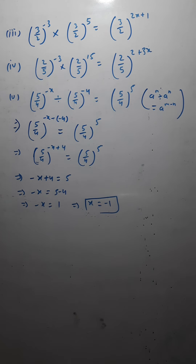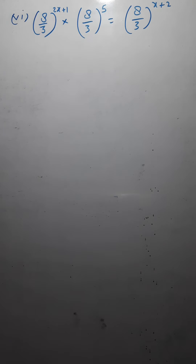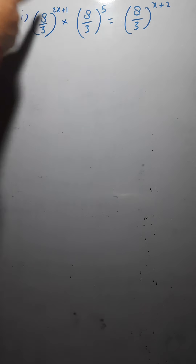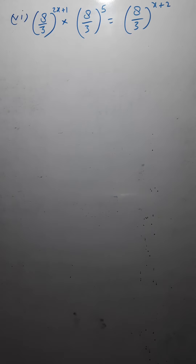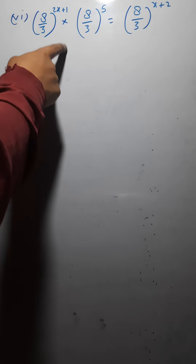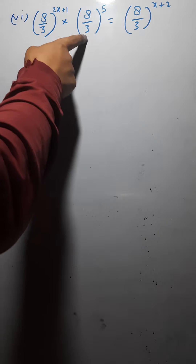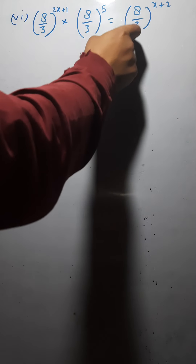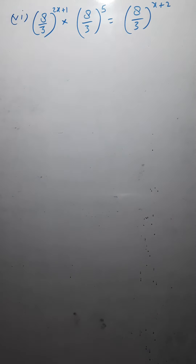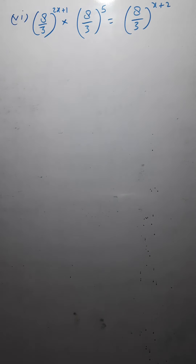This is how you find the value of x. Note it down. The last question of today: (8/3) raised to the power 2x plus 1, multiplied by (8/3) raised to the power 5, equals (8/3) raised to the power x plus 2. You have to find the value of x — here x appears at two places.